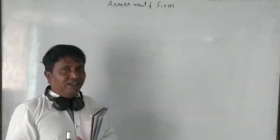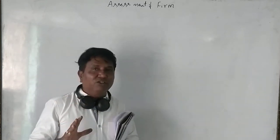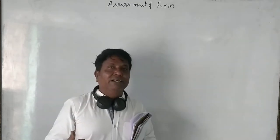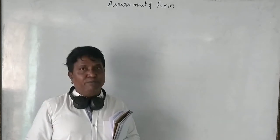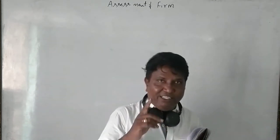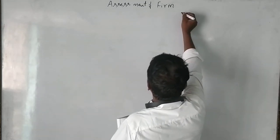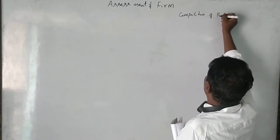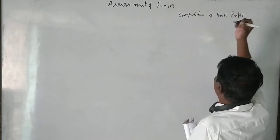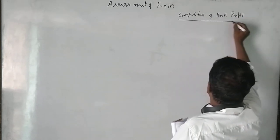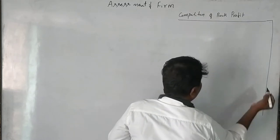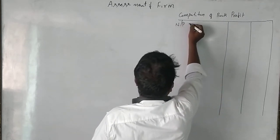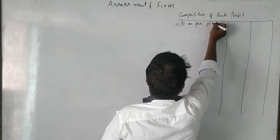This is a very good question. Before calculating the income from business of a firm and allowable remuneration of partners, we first need to calculate the book profit. So let's begin with the computation of book profit. First, we take the net profit as per the profit and loss account.